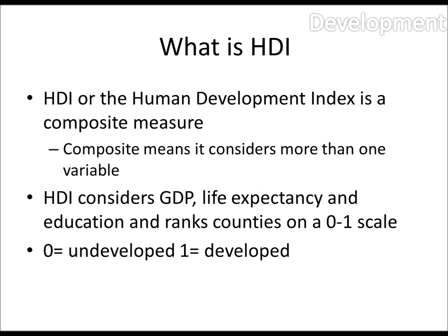So what is HDI? Well, HDI, or the Human Development Index, is a composite measure — and composite means it considers more than one variable. HDI considers GDP, which is Gross Domestic Product, or wealth.